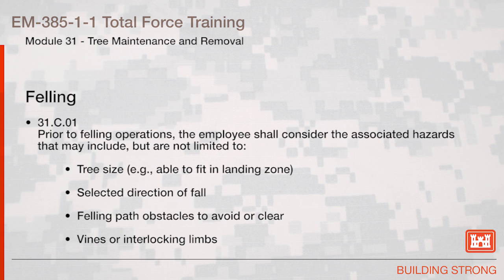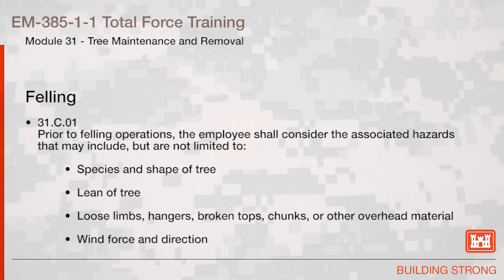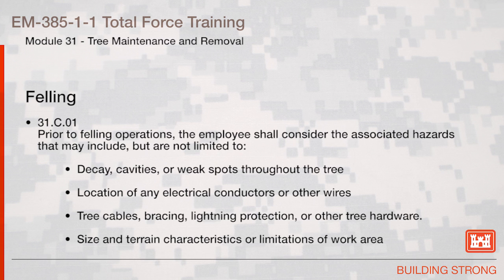Felling: Prior to felling operations, the employee shall consider the associated hazards that may include but are not limited to: tree size (e.g., able to fit in the landing zone), selected direction of fall, felling path obstacles to avoid or clear, vines or interlocking limbs, species and shape of the tree, the lean of the tree, loose limbs, hangers, broken tops, chunks or other overhead material, wind force and direction, decay, cavities or weak spots throughout the tree, location of any electrical conductors or other wires, tree cables, bracing, lightning protection or other tree hardware, and size and terrain characteristics or limitations of the work area.